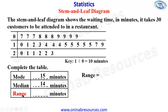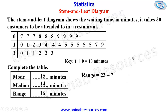To get the range, we take the highest time minus the lowest time. The highest time here is 23 minutes and the lowest is 7 minutes. 23 minus 7 gives 16 minutes, which represents the range of the times. And that's all for this problem and the end of this tutorial — I hope you enjoyed it, goodbye.